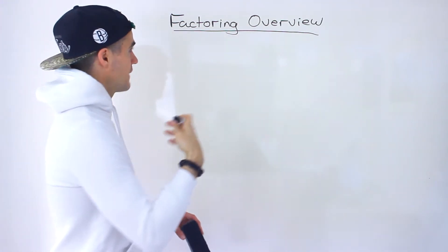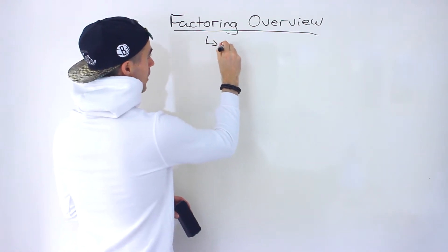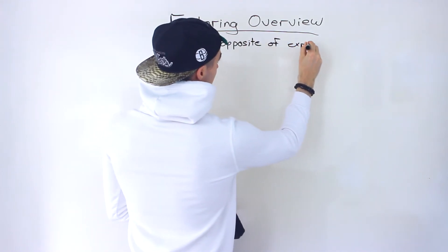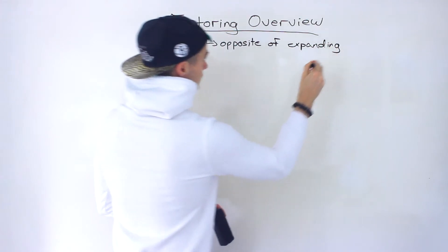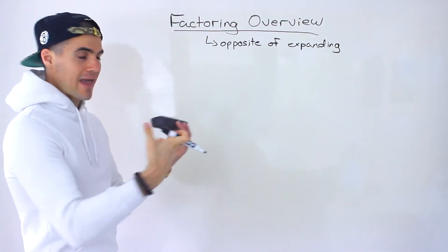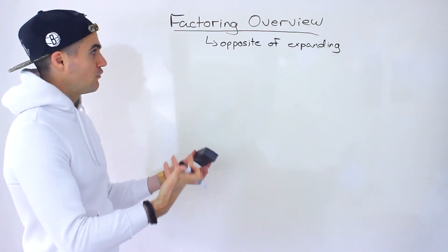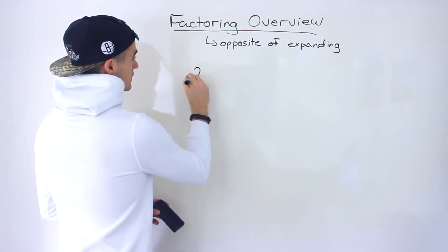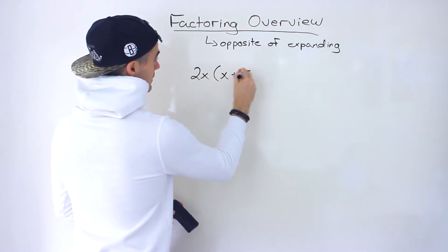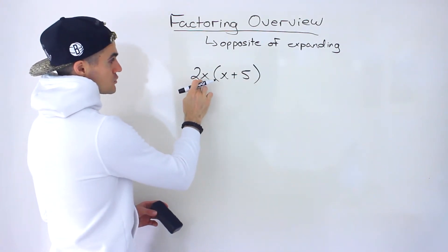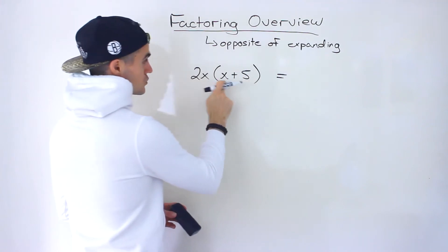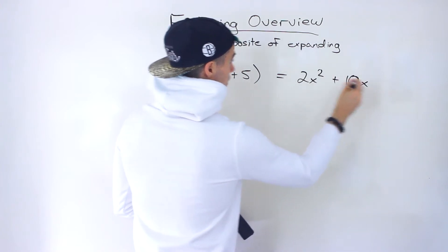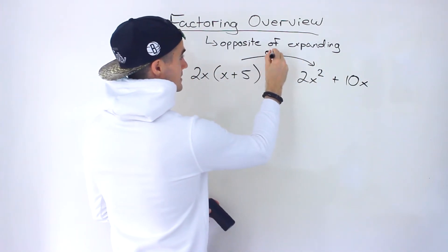The way I like to think of factoring is that it's basically the opposite of expanding. The last few sections, what we've been doing is expanding and simplifying expressions, while factoring is going backwards — it's the opposite of that. For example, we've done questions where we had to expand something like 2x(x + 5). We take the 2x and distribute it into the brackets: 2x times x gives us 2x squared, and then 2x times 5 gives us 10x. So going this way is expanding.